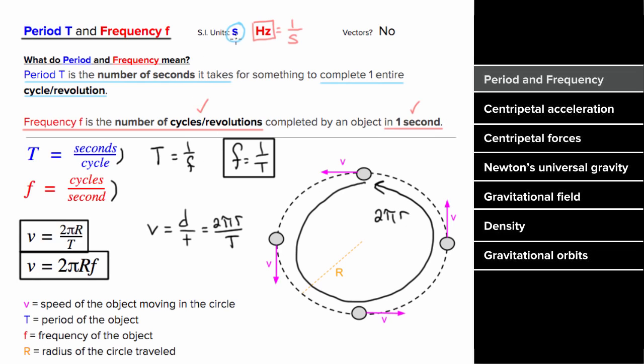Since time is not a vector, these quantities — period and frequency — are not vectors and they cannot be negative. So what does an example involving period and frequency look like?